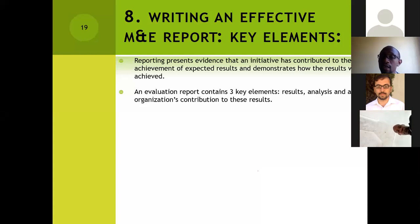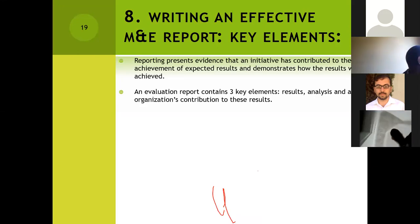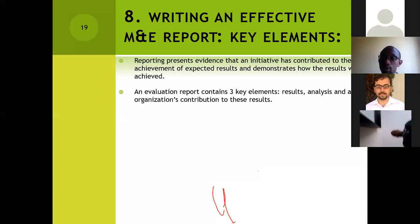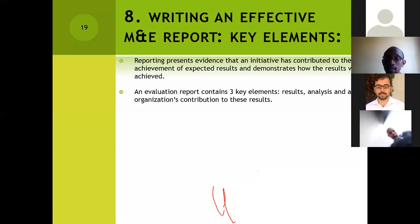The first three elements are critical. You need to focus on results, analyze your results, and show that your organization has contributed to those results. An evaluation report will contain these key elements — the results, the analysis, and the organization's contribution to these results. It is always good to make sure that you have a way to address some of those results as much as possible.